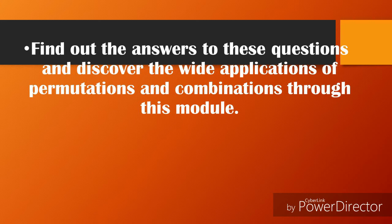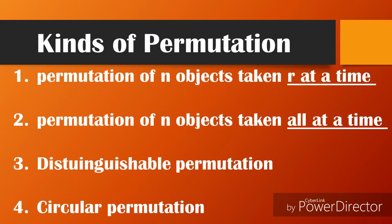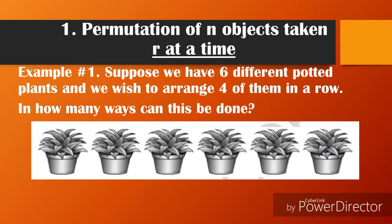Let's look at the kinds of permutations: number one, permutation of n objects taken r at a time; number two, permutation of n objects taken all at a time; number three, distinguishable permutation; and number four, circular permutation. Let's start with number one.